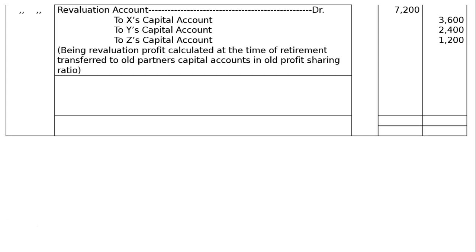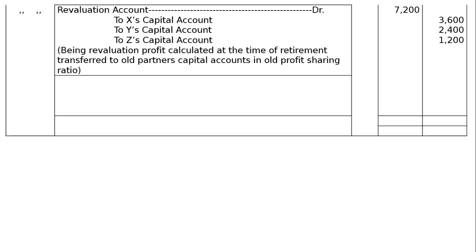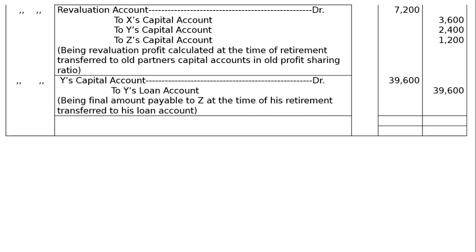Last entry for Y's retirement: Y's capital account debited 39,600 to Y's loan account 39,600. Narration: being final amount payable to Y at the time of retirement transferred to loan account. Both columns total 69,800.